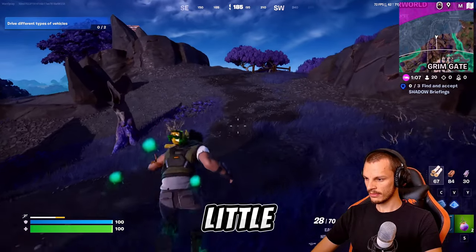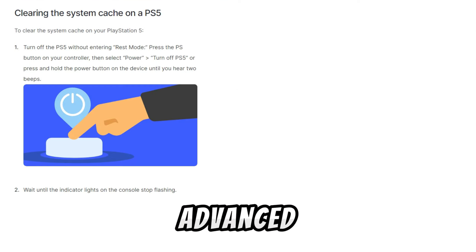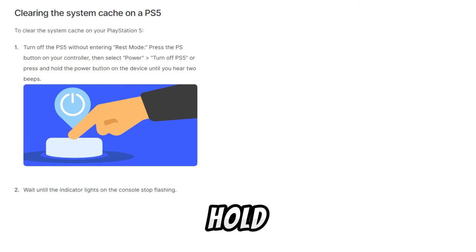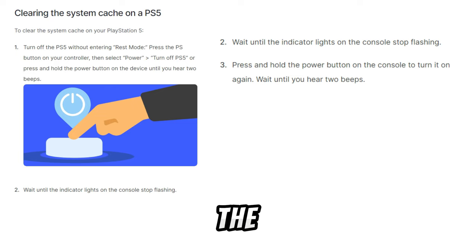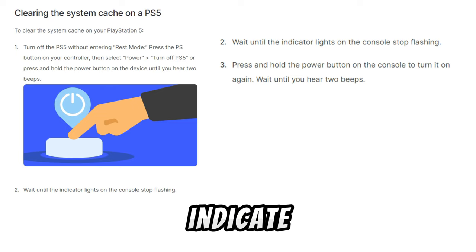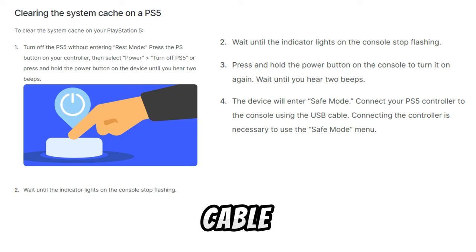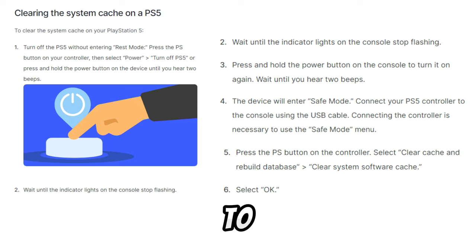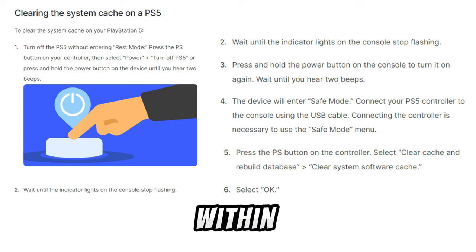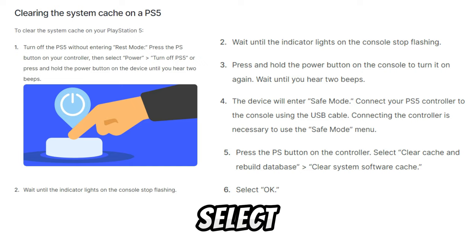On PS5, it's a little more advanced. Turn the console off, then press and hold the power button until you hear the second beep, which puts your PS5 into safe mode. Connect your controller with a USB cable, navigate to the clear cache and rebuild database option, choose clear system software cache, select OK, and that's it.